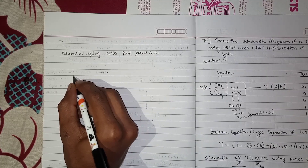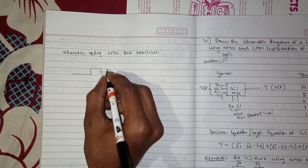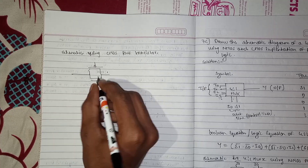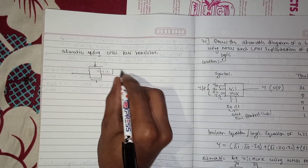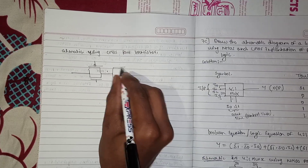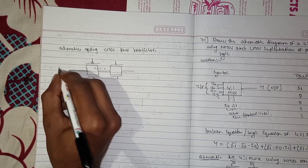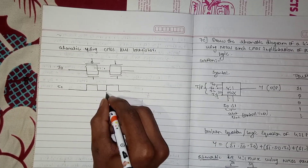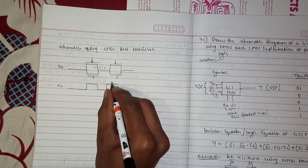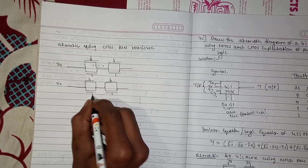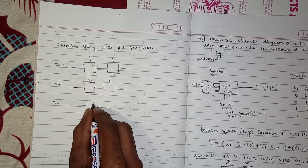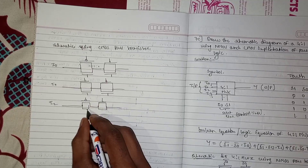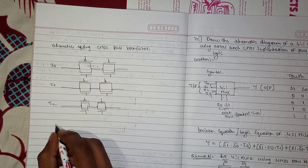I will draw it for you. For each input section, the PMOS transistor is on top and the NMOS transistor is below. I will first draw all four pairs — for i0, i1, i2, and i3 — then explain how to label the gate terminals.